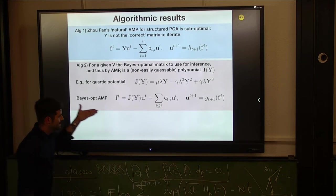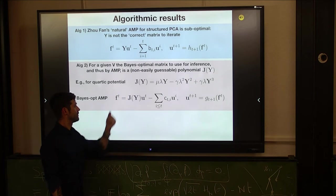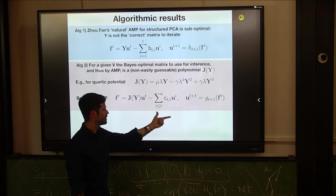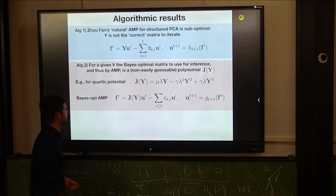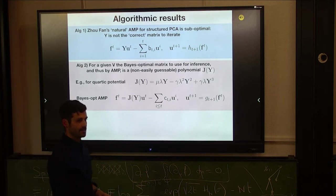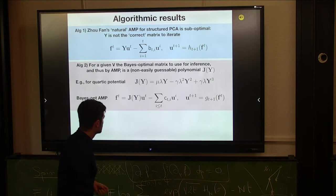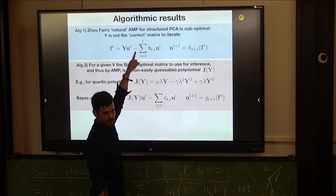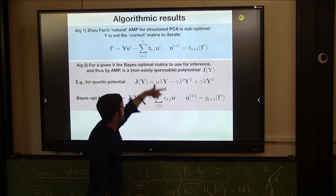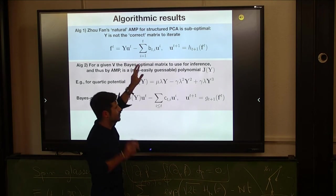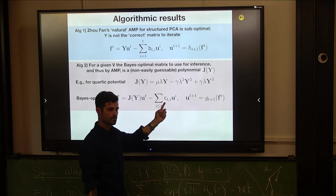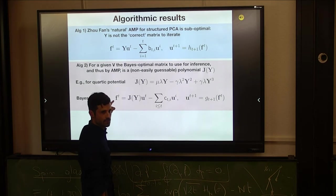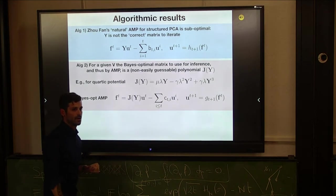The Bayes optimal AMP then becomes this iterate, where now the matrix here is this G of Y. But the structure is the same. Matrix multiplication, removal of Onzager reaction, denoising, and you repeat. The coefficients B of T and I, and C of T and I, you can compute in a self-consistent way. So first these coefficients here are already in that simpler case highly non-trivial in this kind of structured problem. And from the understanding of how it works for this kind of standard recursion where you have the matrix Y appearing there, we can understand what are those coefficients. But this comes from essentially enforcing the Gaussianity of these quantities, we can understand what should be these corrections.